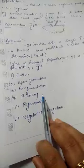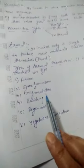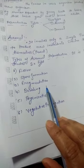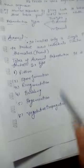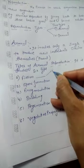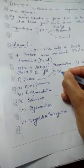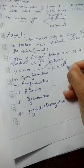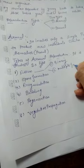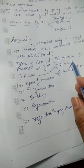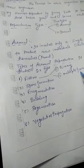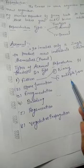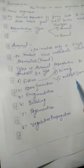First of all, we will discuss fission. Fission means the splitting of the nucleus into two or many parts. Fissions are further divided into two types: first is binary fission and second is multiple fission. 'Bi' means two, so binary fission is when the nucleus splits into two parts, and multiple fission is when the nucleus splits into many parts.